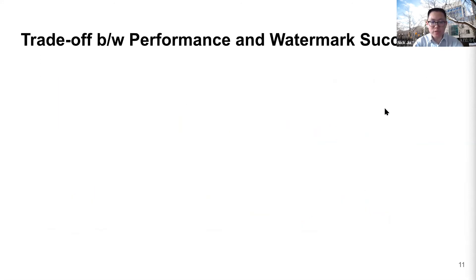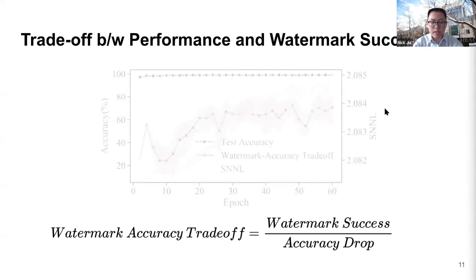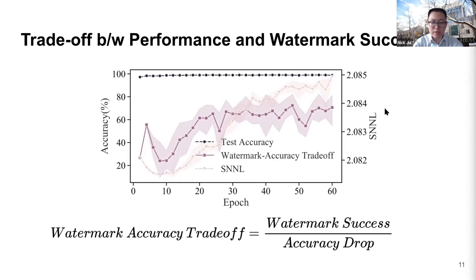In our threat model, we assume a very strong adversary that has access to the training data. Therefore, to transfer the watermark to the extracted model, we have to purposely provide some wrong predictions, leading to a drop in accuracy. This drop is usually within one percentage point, so we believe it is worth it to protect the IP of the models. To quantify this trade-off, we compute the watermark accuracy trade-off as the percentage of watermark data classified as the target class divided by the drop in accuracy. In our experiment on MNIST, we plot this trade-off, validation accuracy, and the magnitude of the soft nearest neighbor loss during training. As the soft nearest neighbor loss is maximized, we achieve a better trade-off — we suffer a smaller accuracy drop and obtain a more easily verifiable watermark.